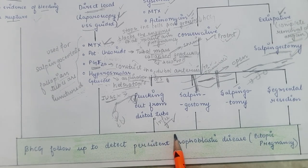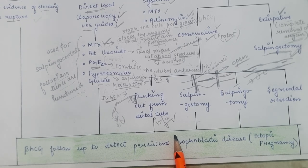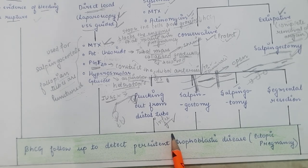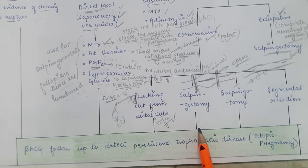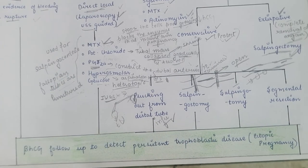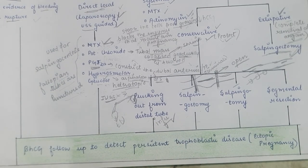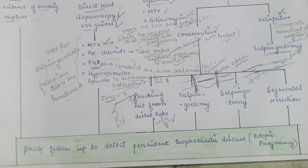That covers tubal ectopic pregnancy in detail, as it accounts for 97% of ectopic pregnancy cases. The other types are uncommon. If you have any queries, please ask in the comment section and I will answer them.